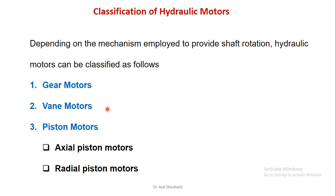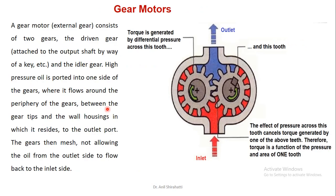Let's start with gear motors. This is a simple sketch of a gear motor. An external gear motor consists of two gears: the driven gear, attached to the output shaft by way of keyways, and the idler gear. High pressure oil is ported into one side of the gear, where it flows around the periphery of the gear between the gear tips and the wall housing.